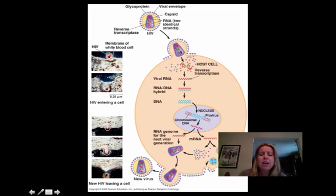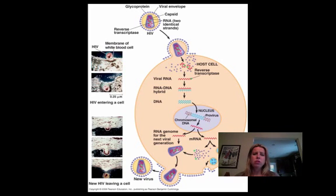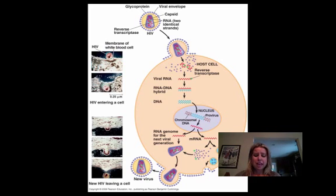Blocking fusion would be great. They can also use drugs that attack the reverse transcriptase enzymes and make them faulty. There are all sorts of different places where they could fight it. Hopefully you know at this point that people don't usually die of HIV — they die from AIDS.